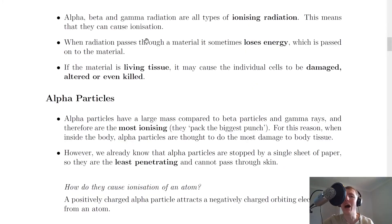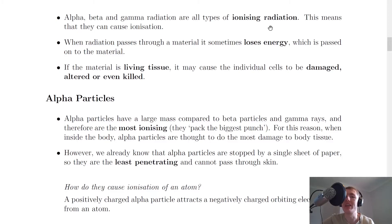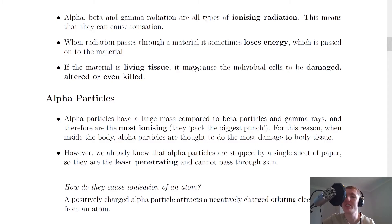Alpha, beta, and gamma radiation are all types of ionizing radiation, meaning they can cause ionization. This is why these types of radiation are pretty dangerous. When radiation passes through a material, it sometimes loses energy which is passed onto the material. If the material is living tissue, this gain of energy may cause individual cells to be damaged, altered, or even killed. So it's the idea of ionizing radiation depositing energy in the material it's passing through which can cause it to become damaged.